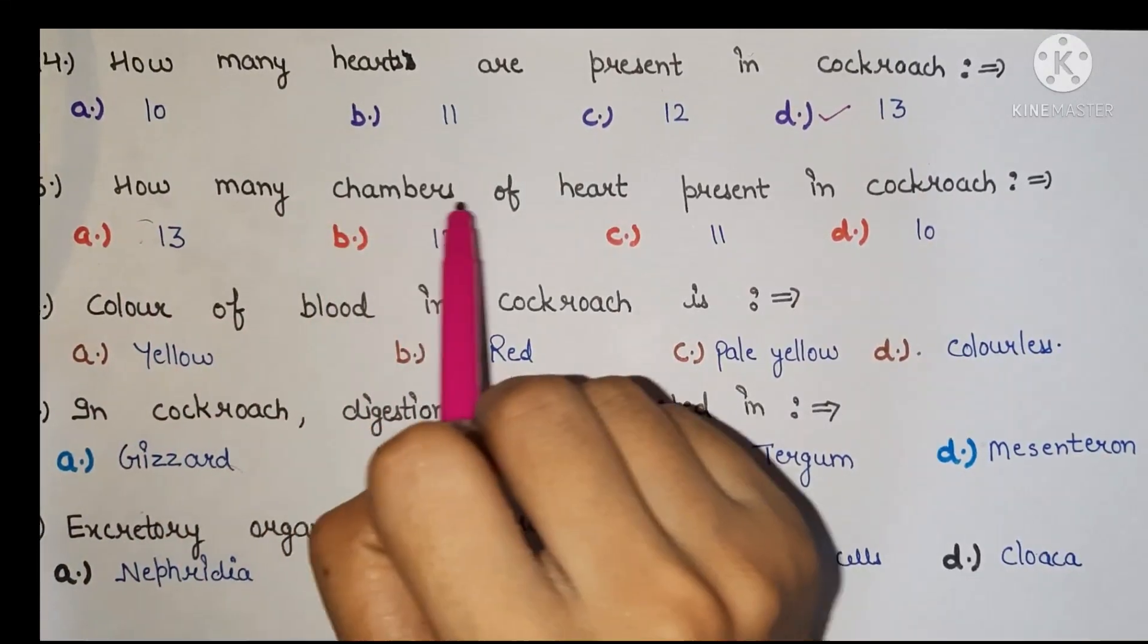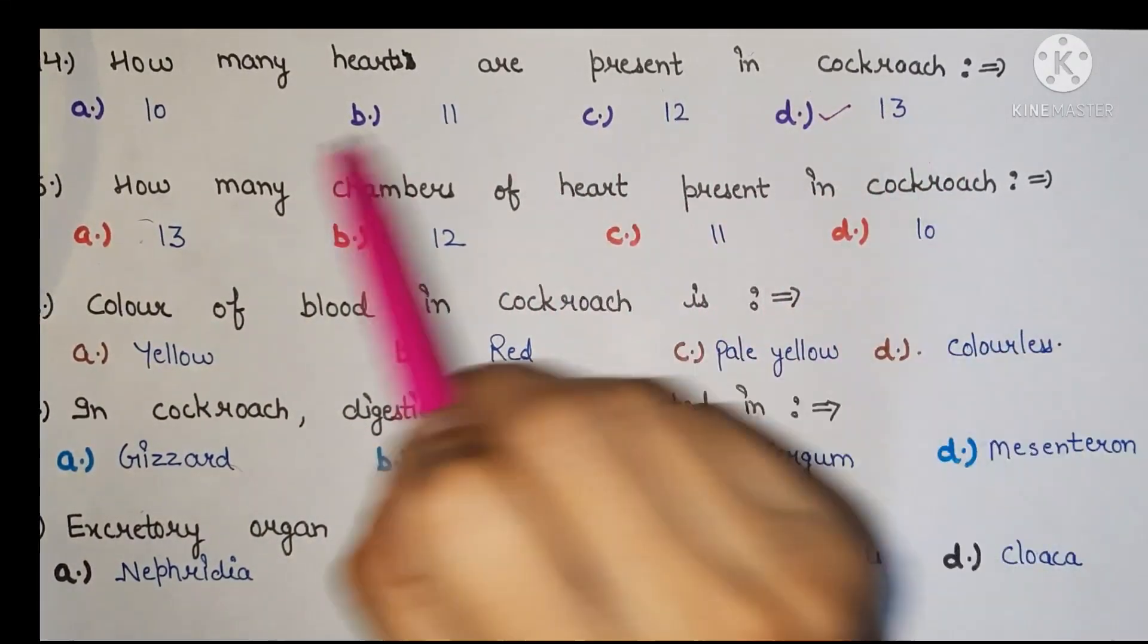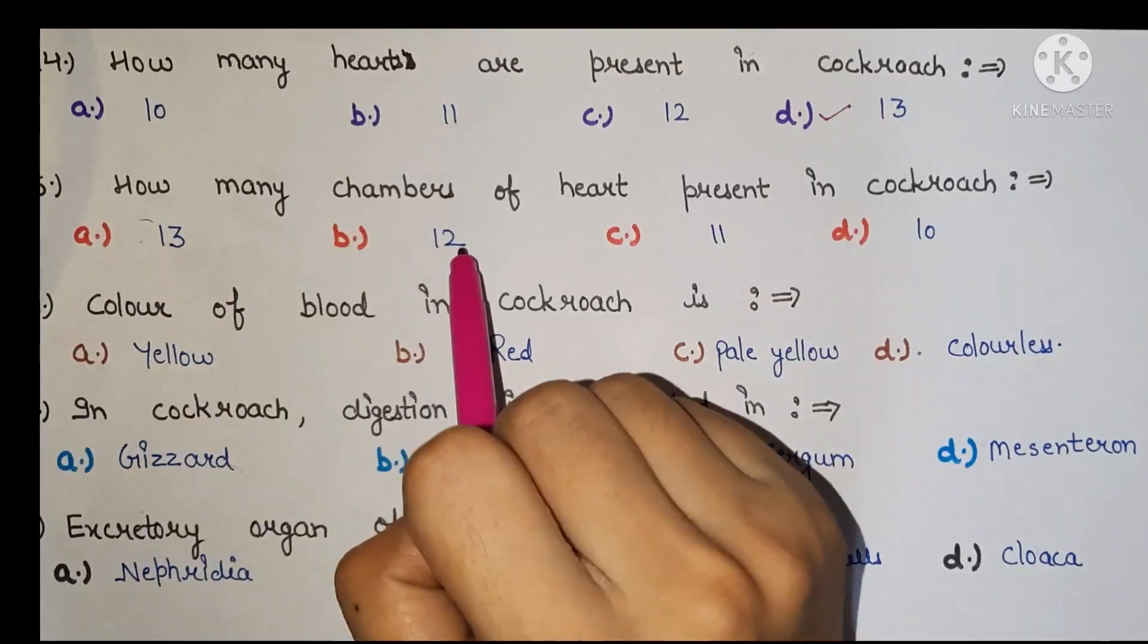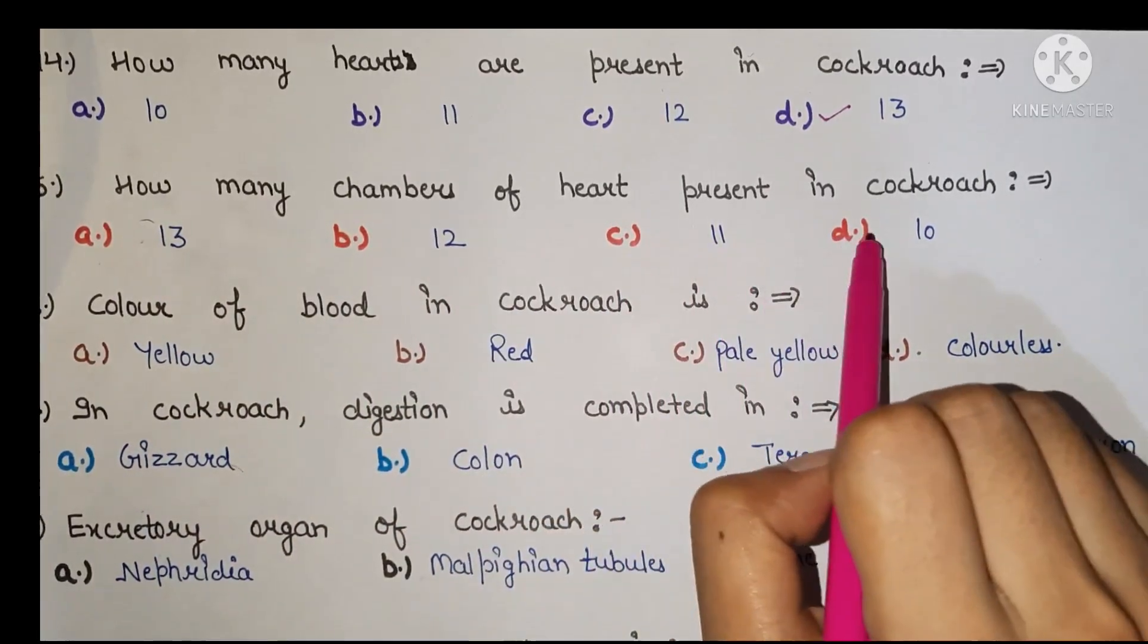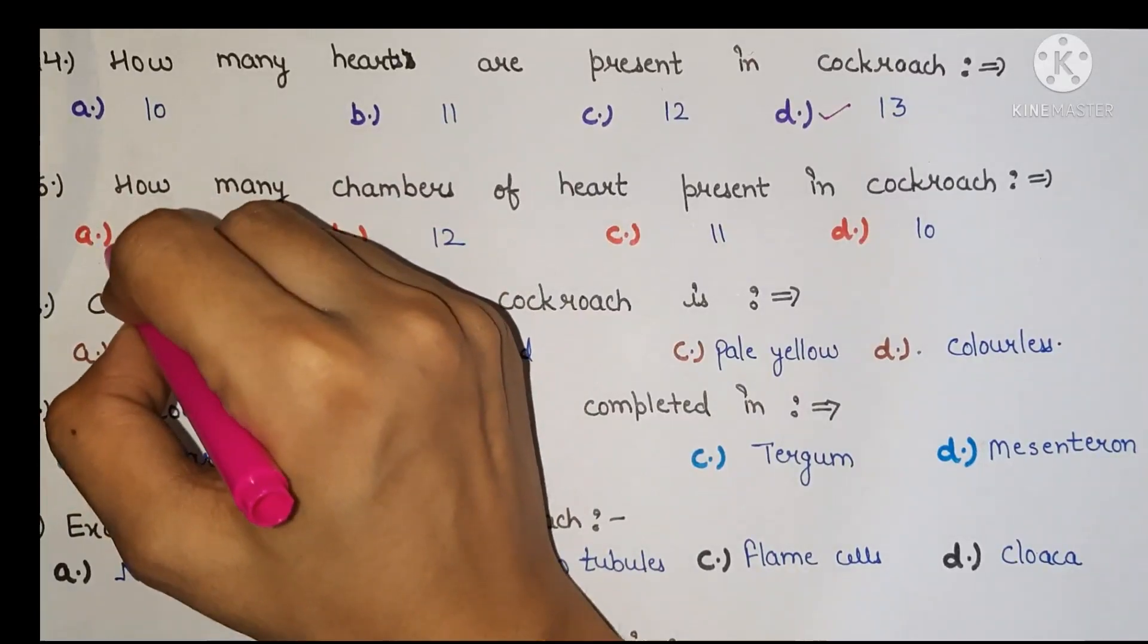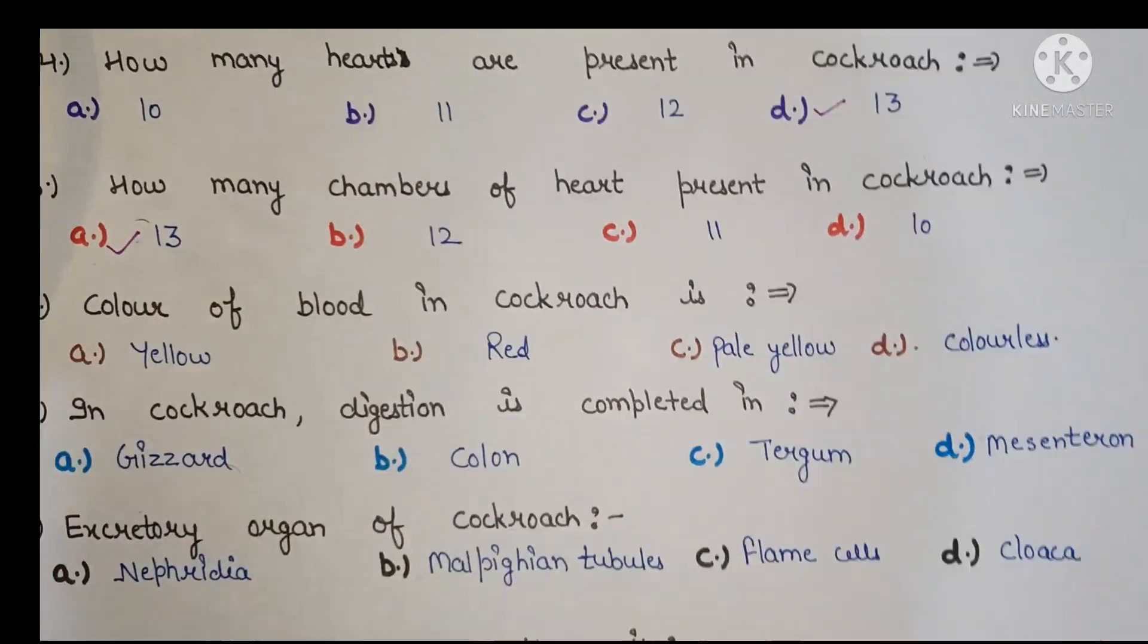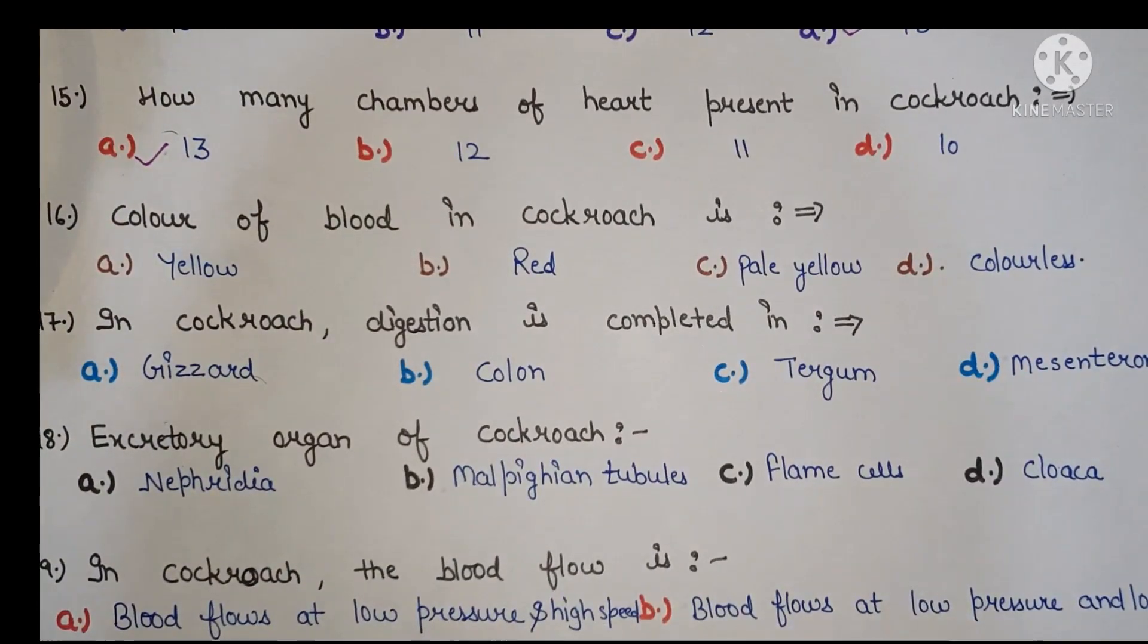Next, how many chambers of heart present in cockroach? A 13, B 12, C 11, D 10. The right answer is A, 13.